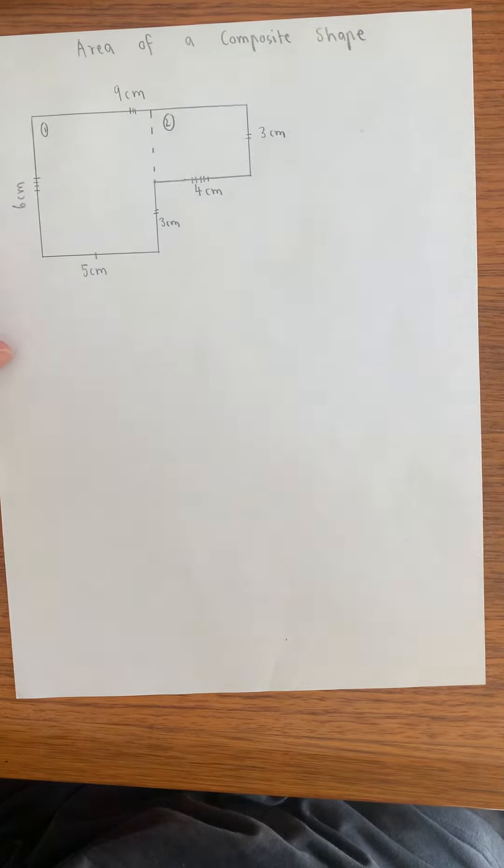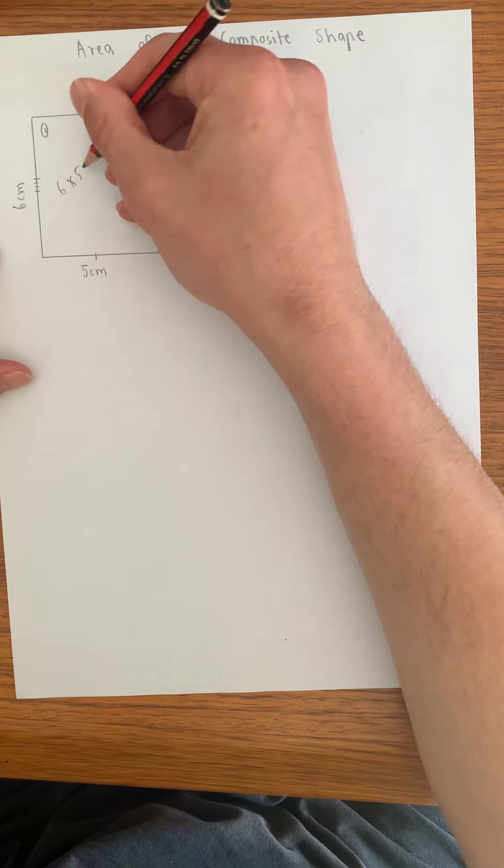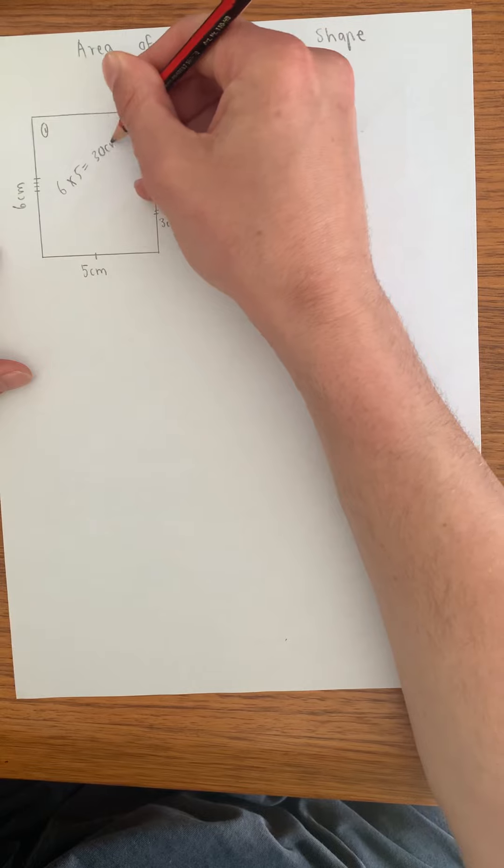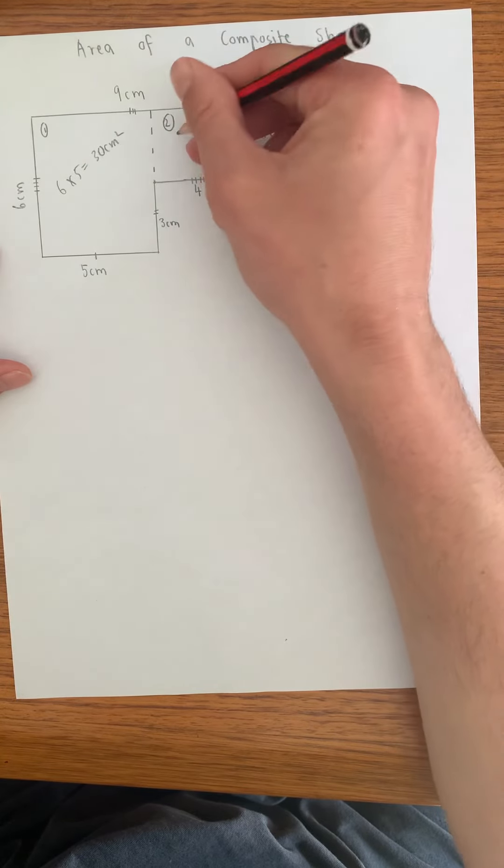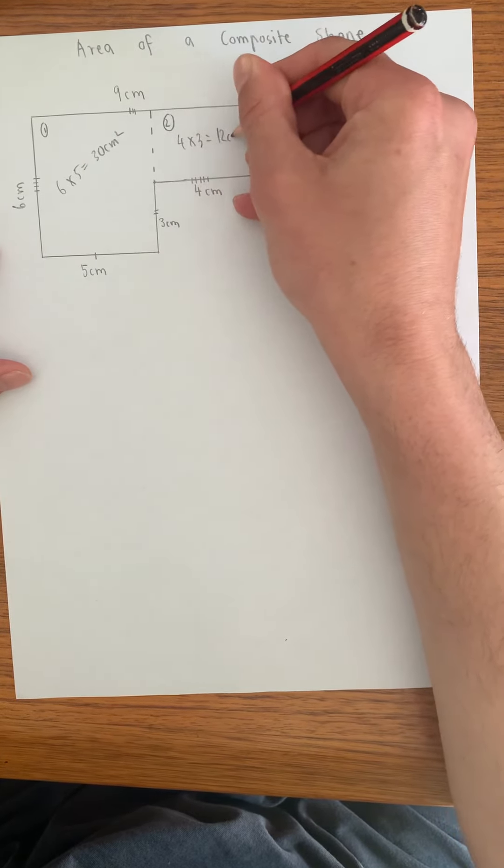And if I was to do this one, 6 times 5 equals 30 centimeters squared. 4 times 3 equals 12 centimeters squared.